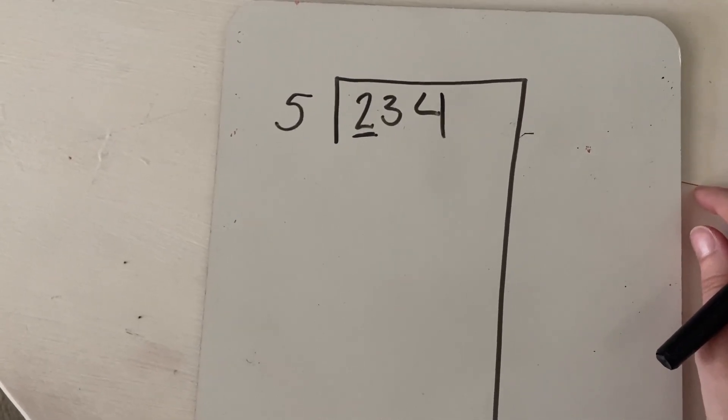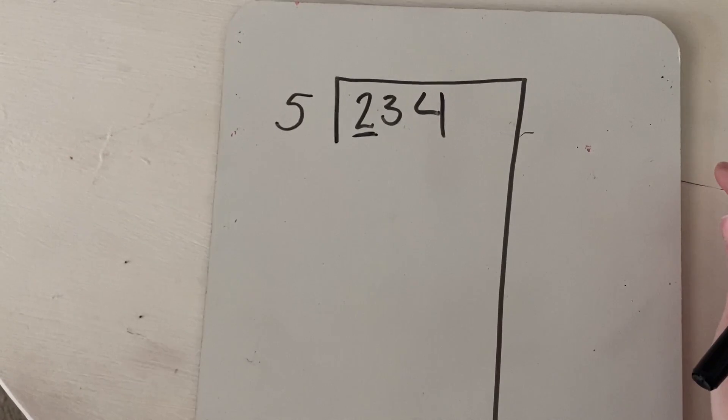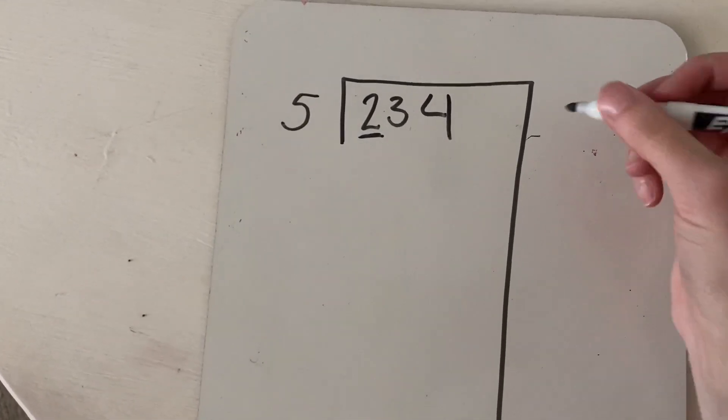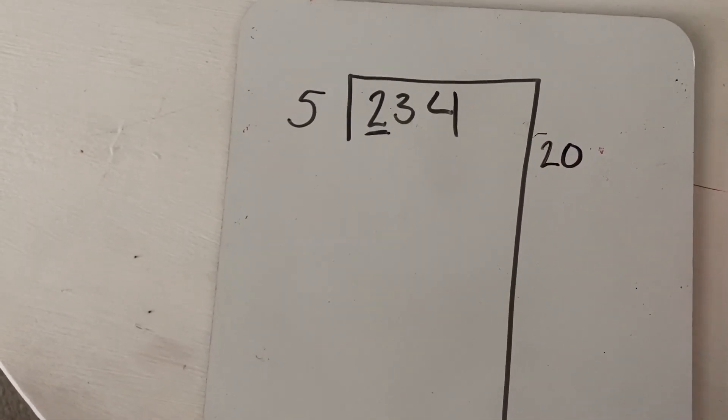But what if I did five times 20? Well, five times two is 10. So five times 20 would be 100. That's not all the way there yet, but it's something. So we're going to go ahead and do that.